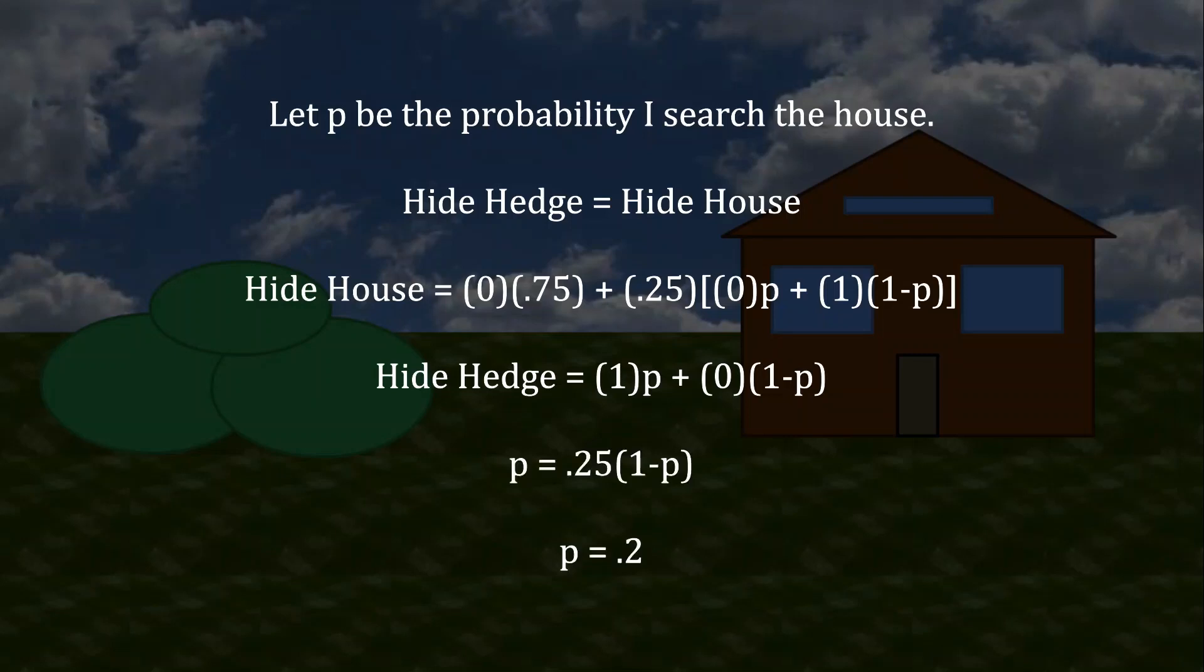Because we wanted to make those two things equal to one another, we simply set them equal to one another, and then solve for P. And when we do that, we get P equal to 0.2. So 20% of the time I should search behind the house, and 80% of the time I should search behind the hedge. The intuition that we had before is working out correctly. Now that we have the security light, I am less likely to search the house than I was before.